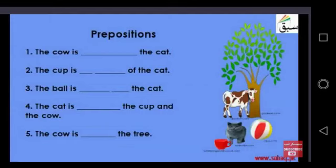Number 3. The ball is dash the cat. The ball is near the cat. Rather than we say that, the ball is beside the cat.